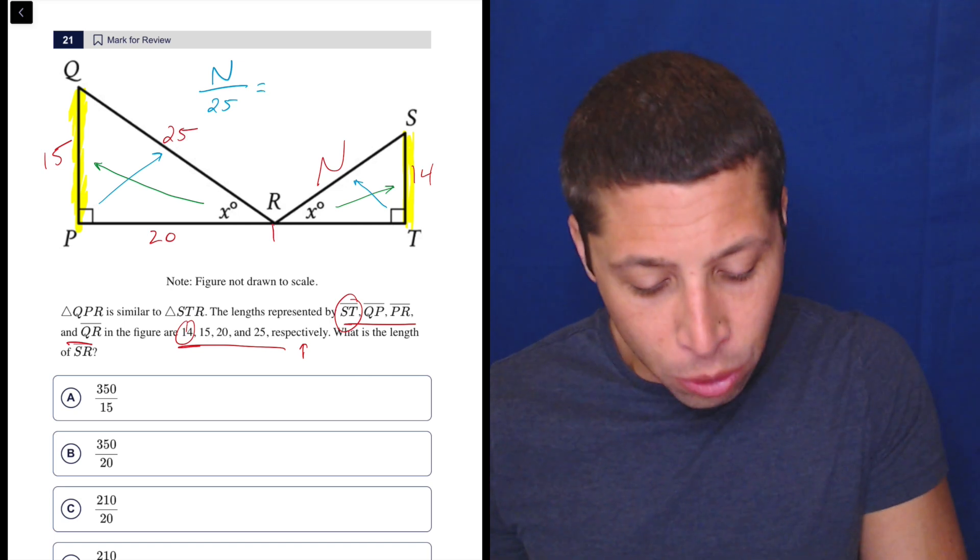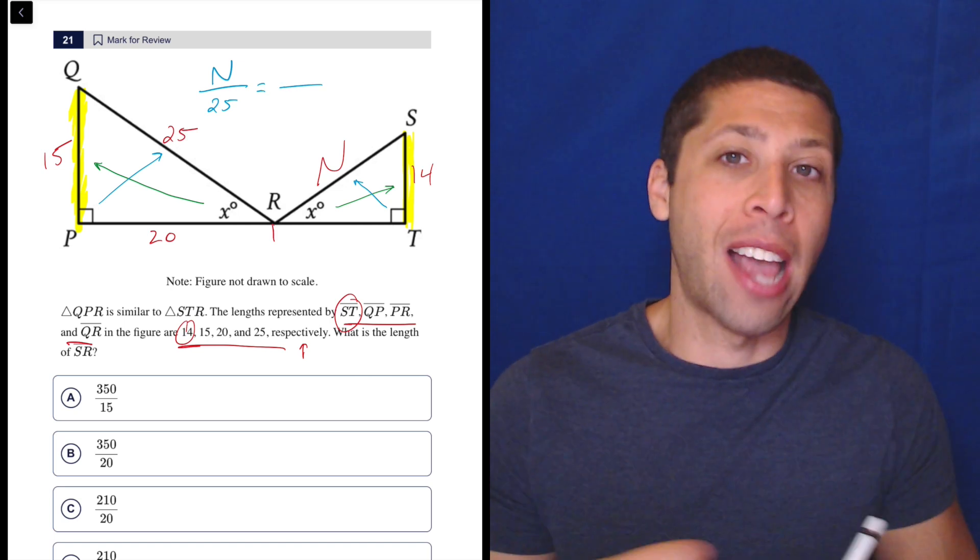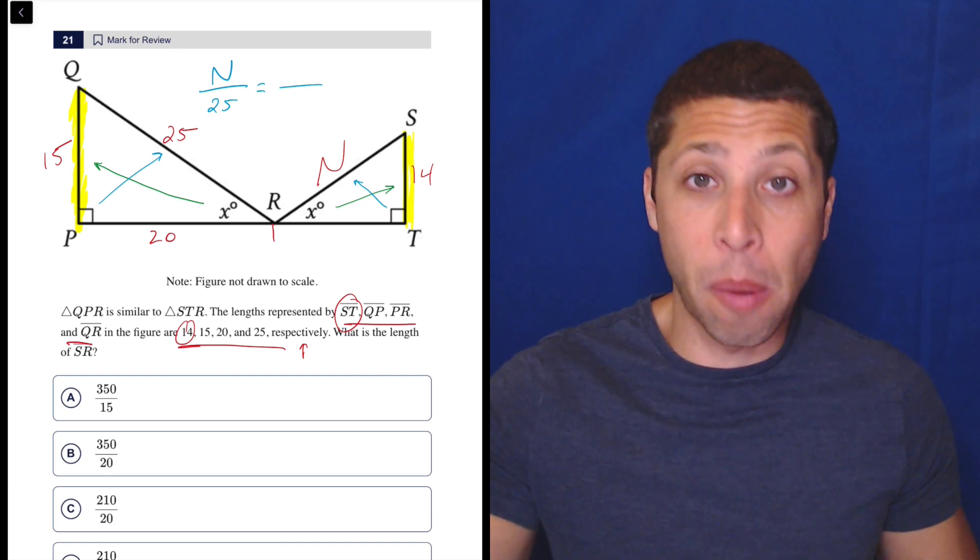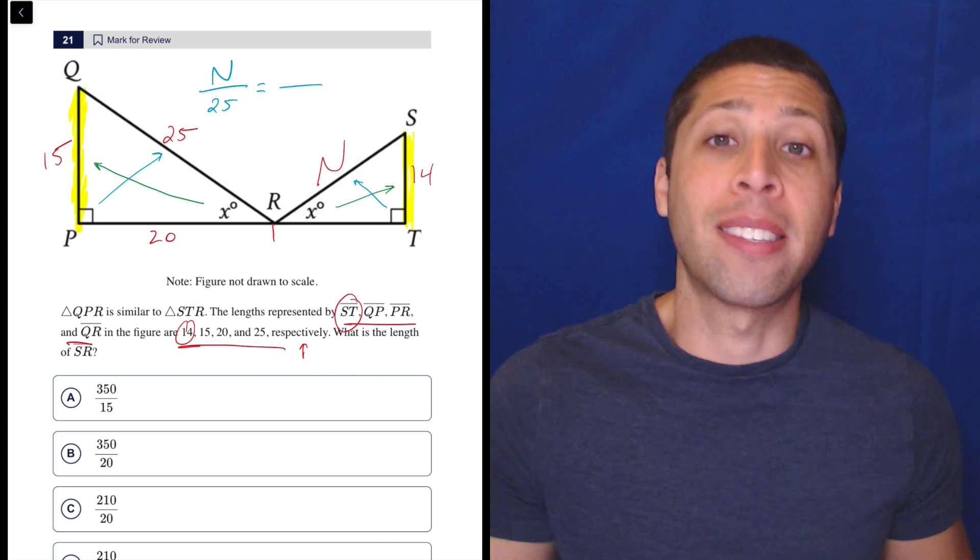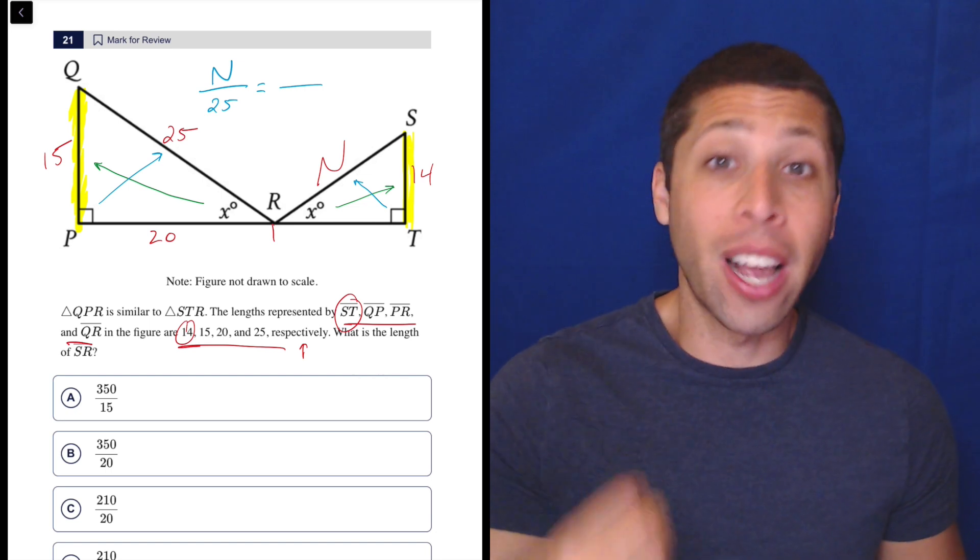But I need to compare them to something else to kind of have that setup of whatever the proportion is, the ratio. That's what makes a similar triangle similar is their sides are in proportion.